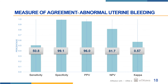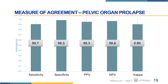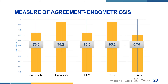For abnormal uterine bleeding, we identified a sensitivity of 51%, a specificity of 99%, and a strong kappa agreement. Cases of pelvic organ prolapse had overall a very high level of validity, with a sensitivity of nearly 91%, a specificity of 98%, and a kappa statistic that was near perfect.